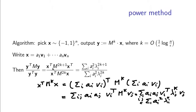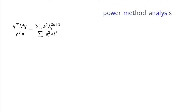So we have this calculation for the case where m is raised to the power of 2k plus 1, and similarly where m is raised to the power of 2k. This is the Rayleigh quotient of the output, and now we need to understand how it relates to lambda_1.